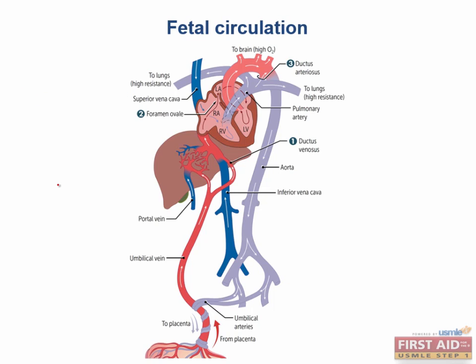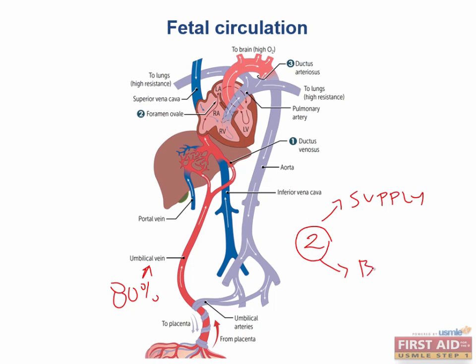Now we move on to fetal circulation — another incredibly high yield topic. We'll walk through fetal circulation and focus on the direction of blood flow in utero versus after birth. The highest oxygen saturation, around 80%, is in the umbilical vein, which transports newly oxygenated blood from the placenta. Even though it has highly oxygenated blood, it's called a vein because it's on the way to the right side of the heart. The blood in the umbilical vein has two options: it can either supply or bypass the liver. One-third of the blood will join the portal vein and enter the liver, where hepatocytes receive oxygen and nutrients.